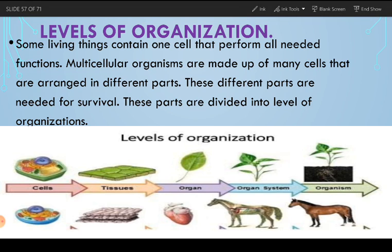Some living things in our surroundings contain only one cell that performs all needed functions — these are unicellular organisms, like bacteria or different germs which we cannot see. They consist of only one cell and that cell performs all functions necessary for survival. Multicellular organisms are made up of many cells — trillions of cells — arranged in different parts. These different parts combine to form the body, and each part plays a very important role in that living organism.